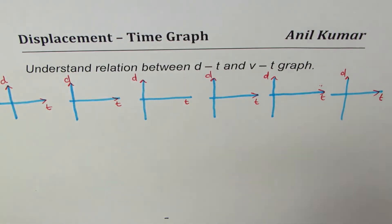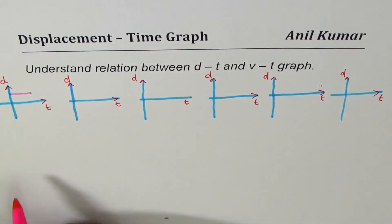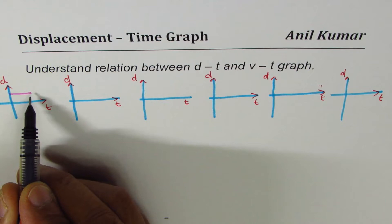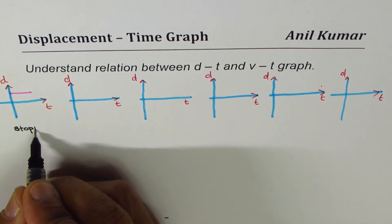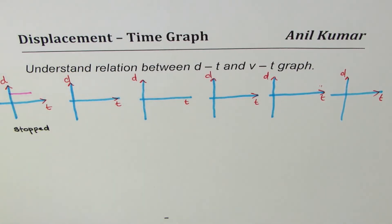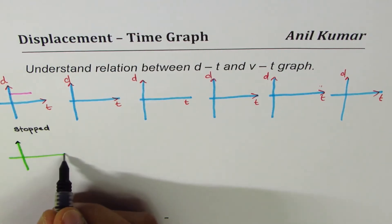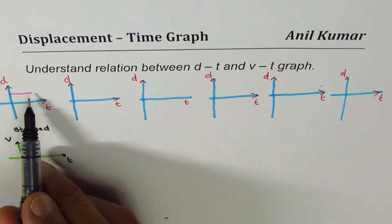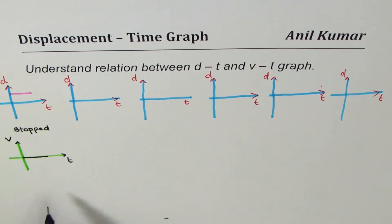In the first case, consider a displacement-time graph that is a horizontal line. As time goes on, displacement remains constant — that means the vehicle is stopped. Since there is no movement at all and displacement is constant, the velocity-time graph will indicate zero velocity throughout.